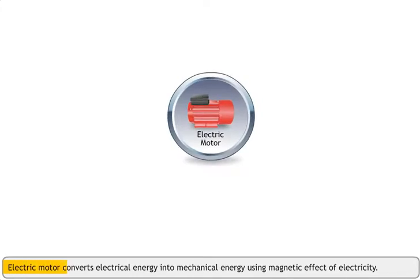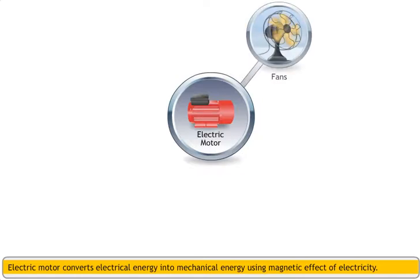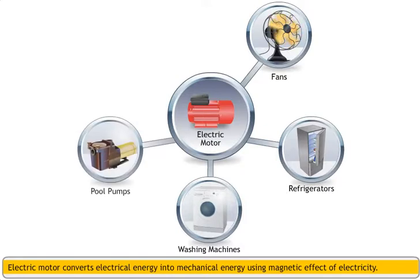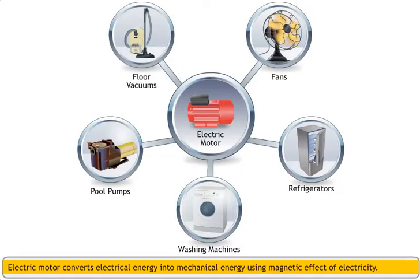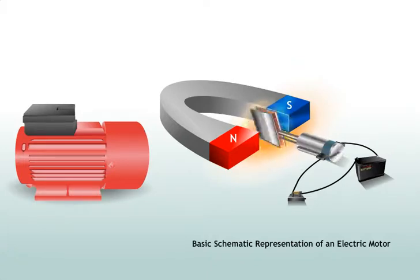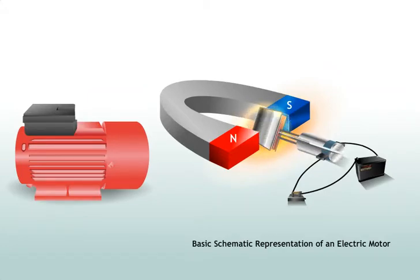An electric motor converts electrical energy into mechanical energy using the magnetic effect of electricity. You find electric motors in household appliances such as fans, refrigerators, washing machines, pool pumps and floor vacuums. An electric motor is built on the principle that a current carrying coil rotates when kept in a strong magnetic field as it experiences torque.